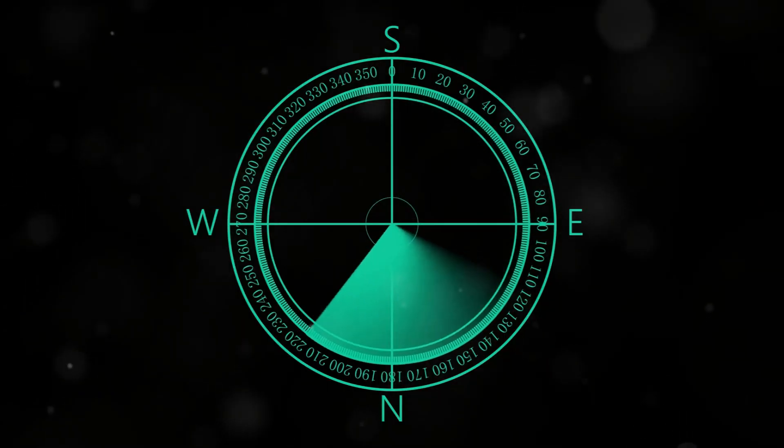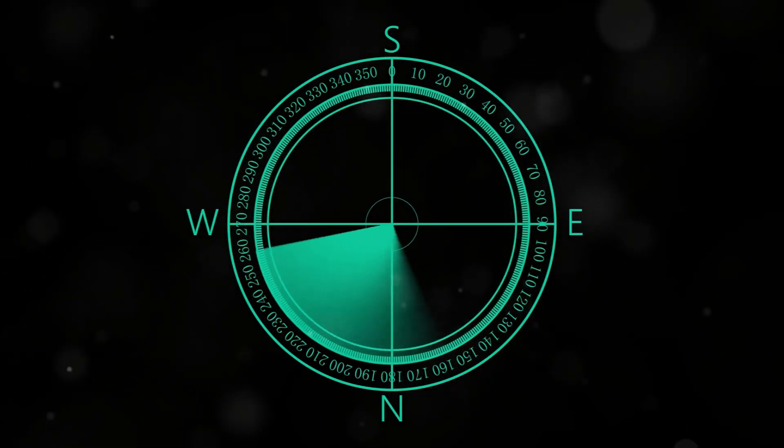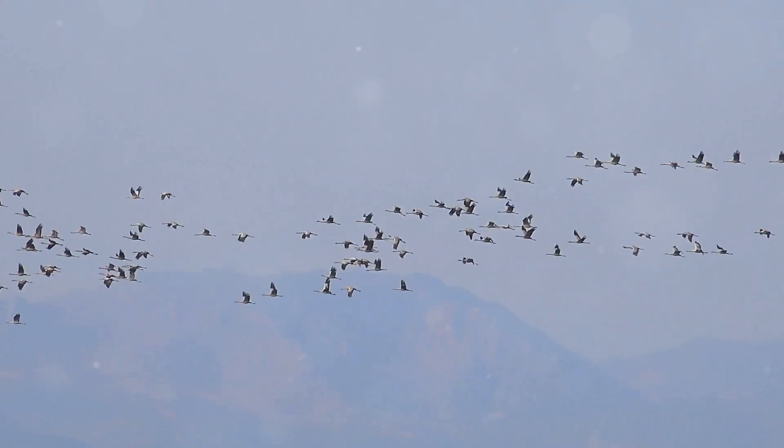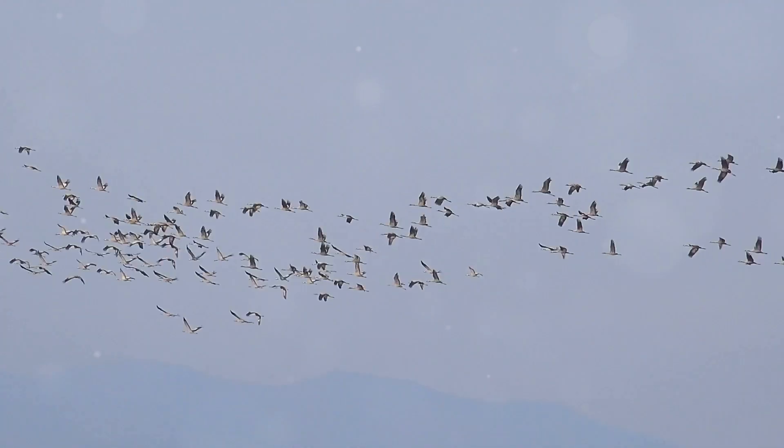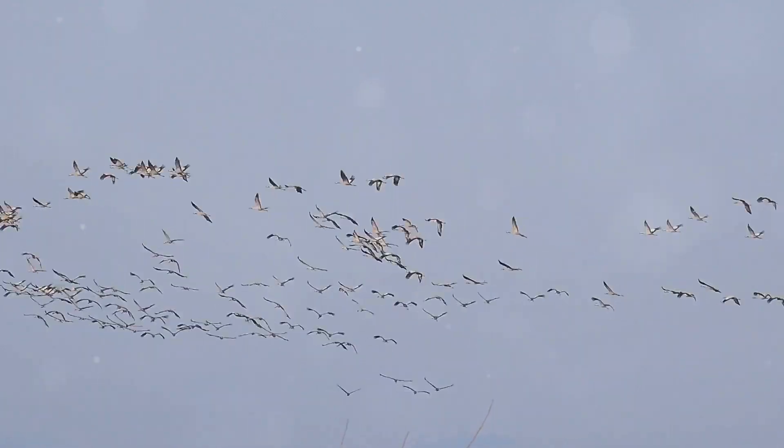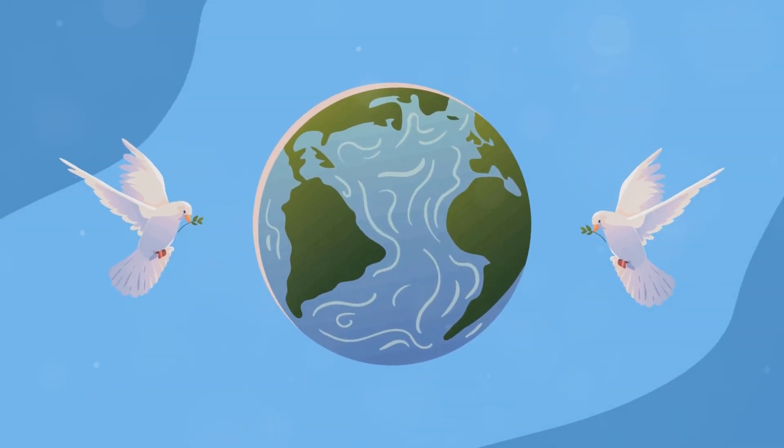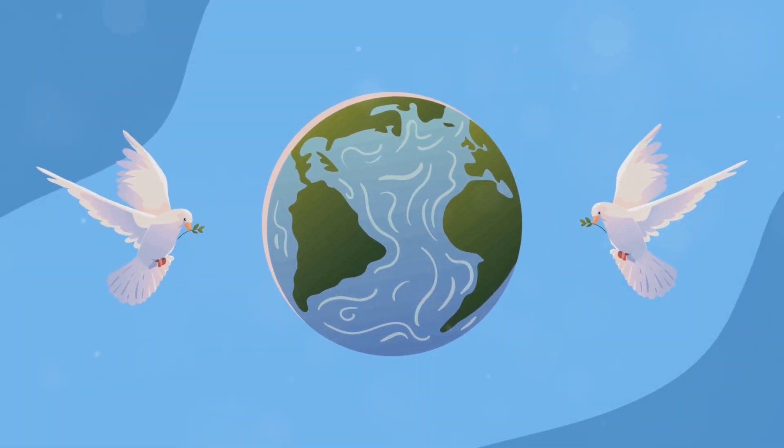Moreover, Earth's magnetic field is crucial for navigation, not only for human technology like compasses and GPS systems, but also for animals. Many species, including birds and sea turtles, rely on Earth's magnetic field for navigation, using it as a natural GPS system to guide their long migrations. I've got a whole video diving into how they sense and use Earth's magnetic field. It's truly mind-blowing. Go check it out if you're interested.